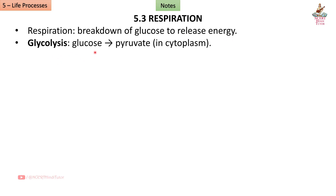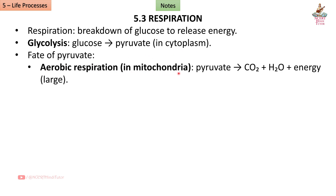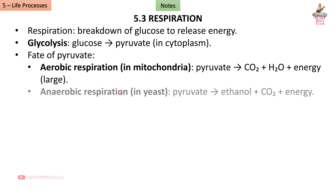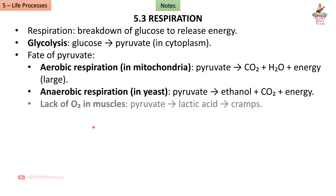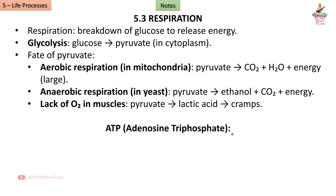Section 5.3: Respiration is the breakdown of glucose to release energy. Glycolysis converts glucose to pyruvate in the cytoplasm. In aerobic respiration (in mitochondria), pyruvate is converted to CO₂ + H₂O + energy. In anaerobic respiration in yeast, pyruvate converts to ethanol + CO₂ + energy. In muscles lacking oxygen, pyruvate converts to lactic acid, causing cramps.